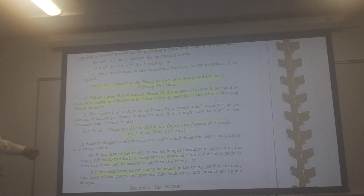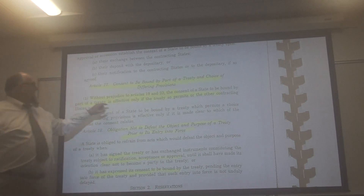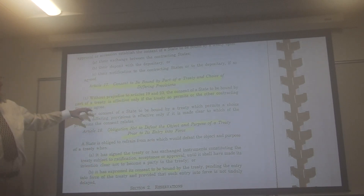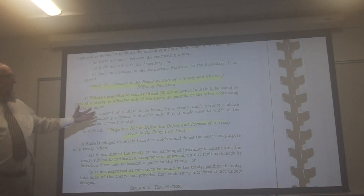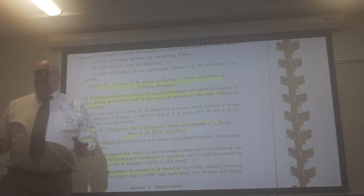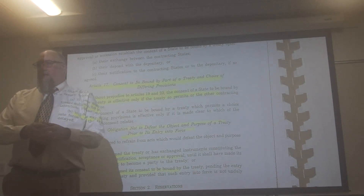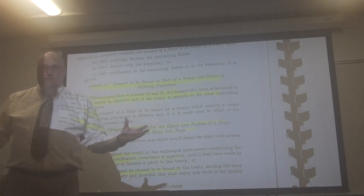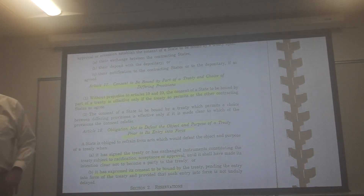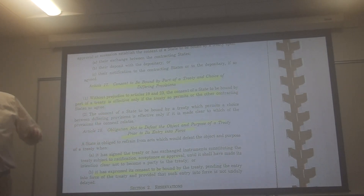Article 17 provides that a state may consent to be bound by only part of a treaty, so long as the other states agree. This may occur when only portions of a treaty are relevant to a state's interests. This interplays with the concept of a reservation, which we'll get to under Article 23, Section 2.